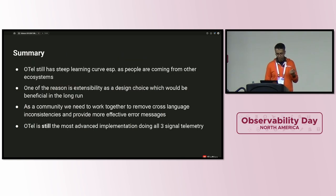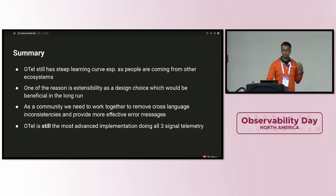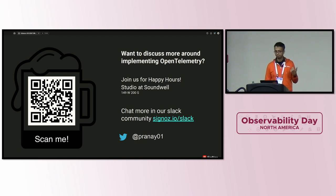To summarize: OpenTelemetry still has a lot of learning curve, but it's for a reason — it's extensible by design. We still have a lot of work to do as a community to remove inconsistencies and provide more informative messages that can help users move faster. If you want to discuss more about OpenTelemetry, come join us on Slack, ping me on Twitter, or we're hosting a happy hour just across the street — scan the QR code and join me. Thank you!